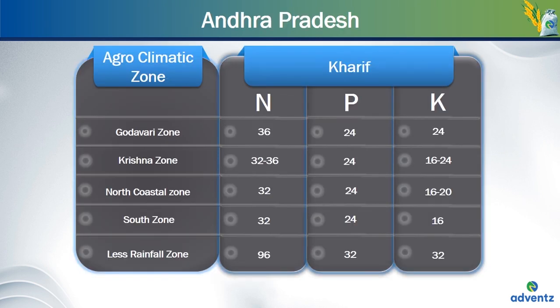If we plant the crop in the Kharif season and the crop is planted in the Godavari zone of Andhra Pradesh, then the amount of nitrogen required is 36 kgs per acre, the amount of phosphorus required is 24 kgs per acre and potassium requirement is also 24 kgs per acre. For the rice crop planted in the Kharif season in Krishna zone in Andhra Pradesh, the amount of nitrogen needed is 32 to 36 kgs per acre, phosphorus required is 24 kgs per acre and potassium needed is 16 to 24 kgs per acre.